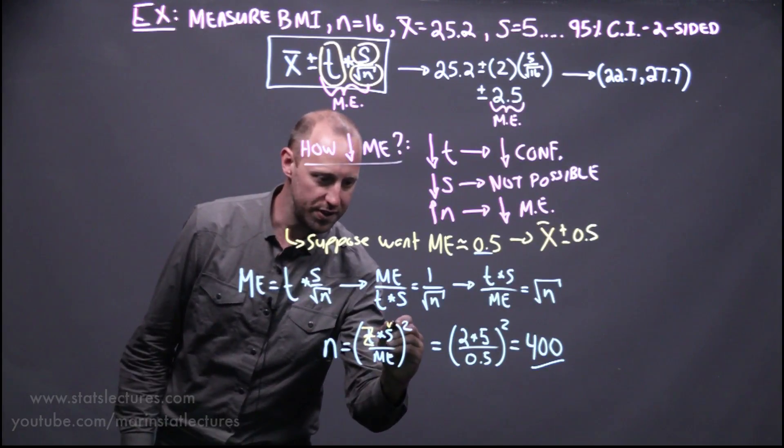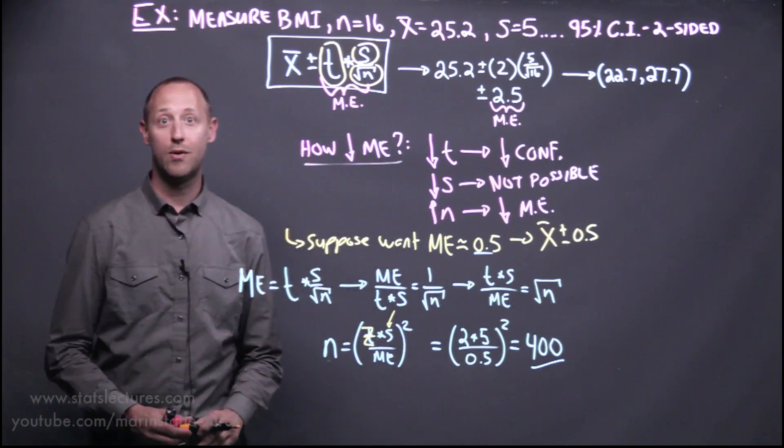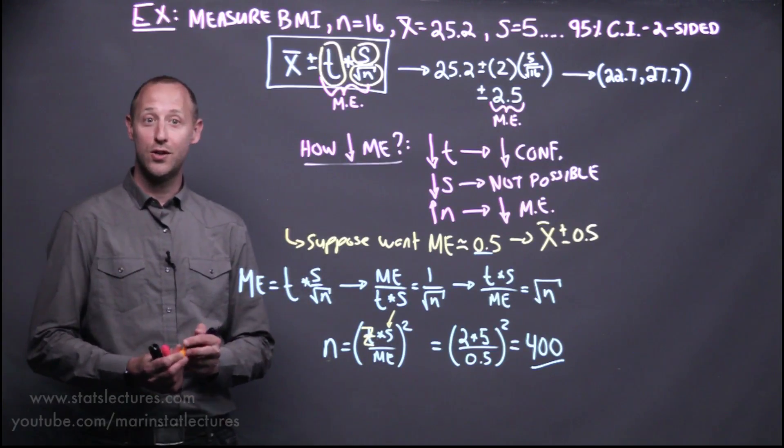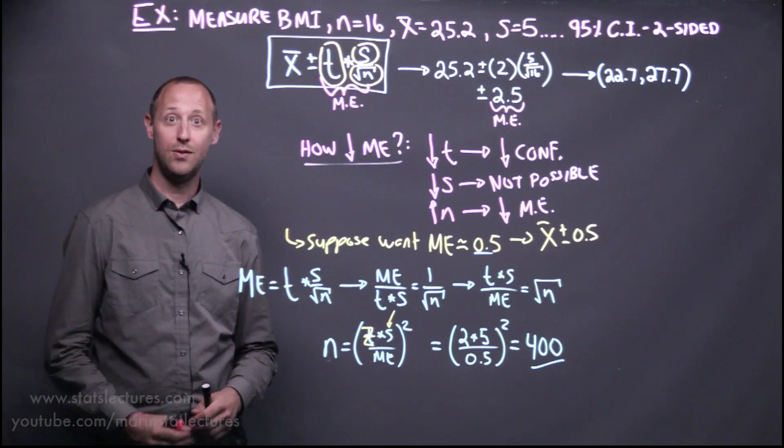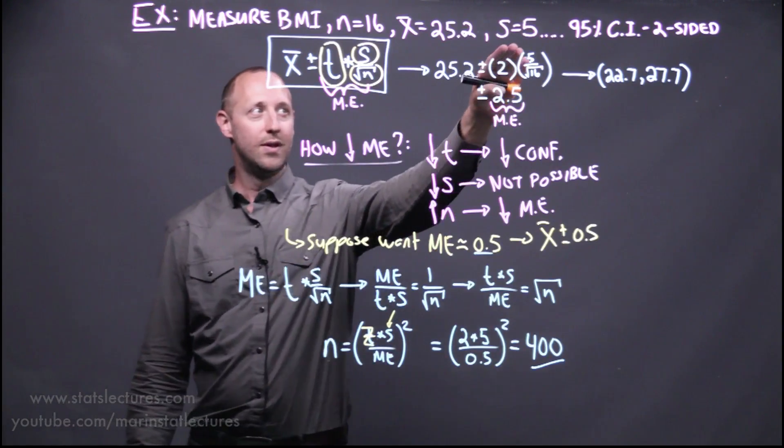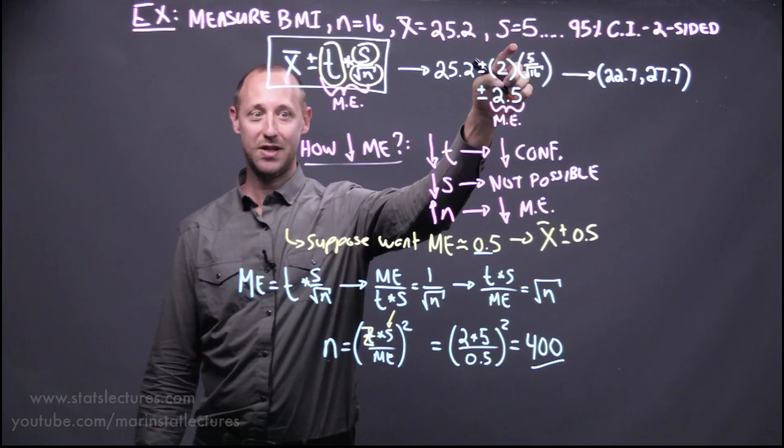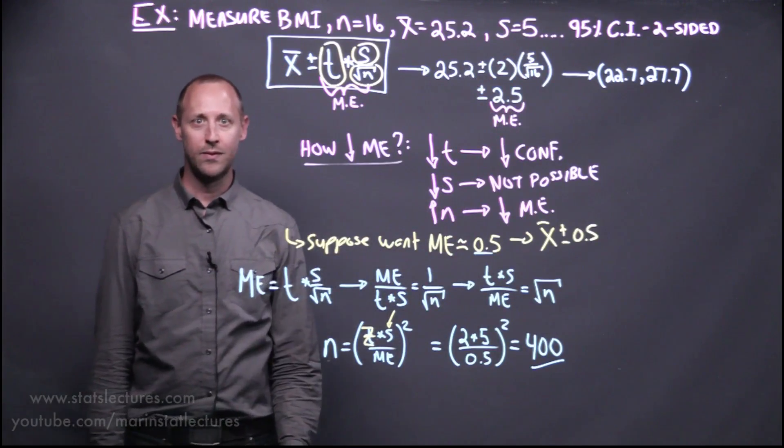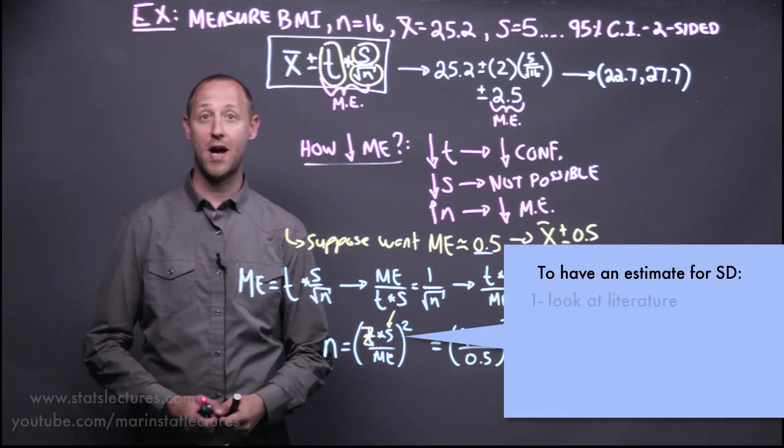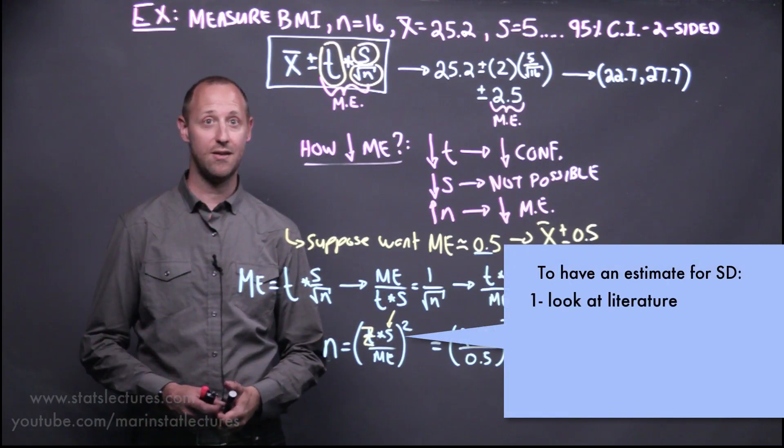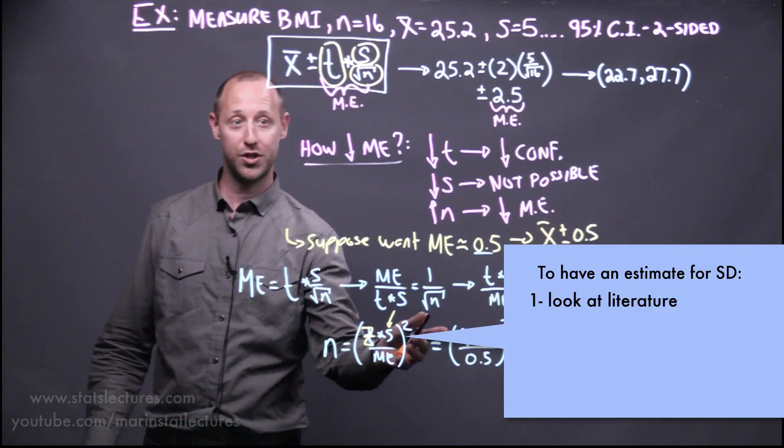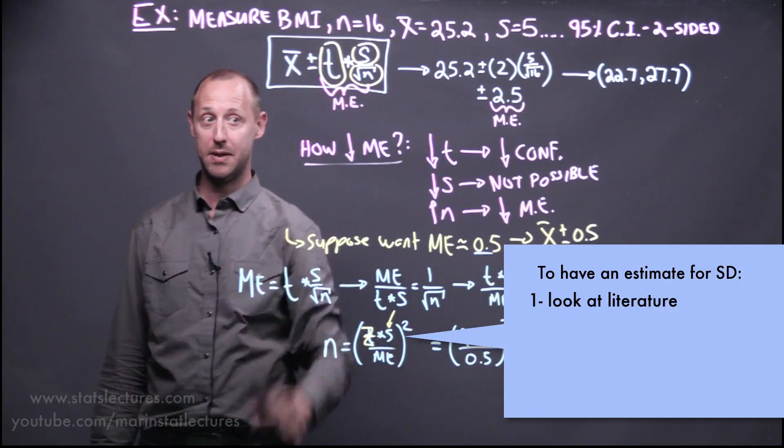A second thing you may have noticed is here we are subbing in the standard deviation. Now if you're going to do this calculation ahead of time to decide what sample size do you need, you likely won't have the data to have estimated the standard deviation yet. So ways around this, ways we can get at that. The first is by looking at literature and seeing if similar studies have been done or if there's anywhere in the literature that gives you a good estimate of what should the standard deviation of BMIs be.